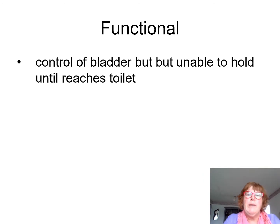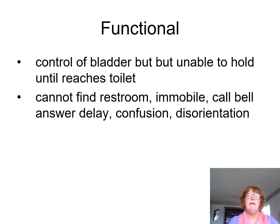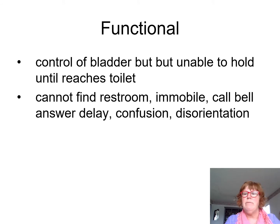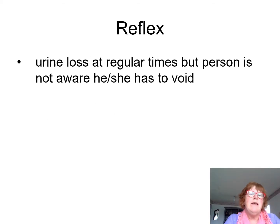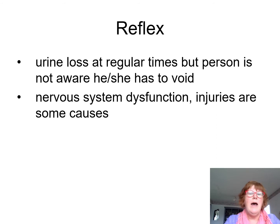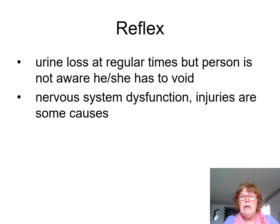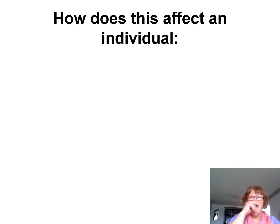Functional incontinence means you have control of your bladder but you're not able to hold it until you reach the toilet — like when a call bell isn't answered, or there's confusion and disorientation. Reflex incontinence is the loss of urine at regular intervals, but the person is not aware they need to void. Nervous system dysfunctions and injuries are usually the causes of reflex incontinence.